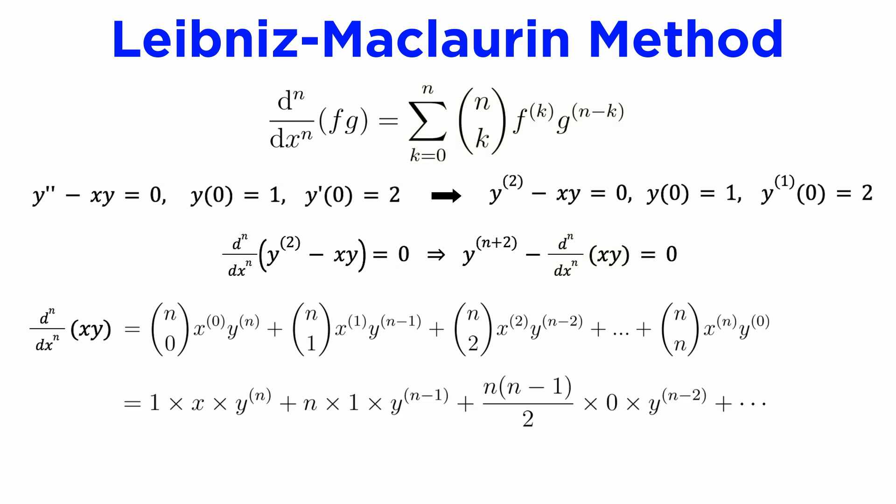If we expand out all n terms of this summation, we observe that the zeroth derivative of x is x, the first derivative of x is one, and the second derivative of x is zero, with all higher derivative terms also being zero, so only the first two terms remain. We get the nth derivative of xy as x times y differentiated n times plus n times y differentiated n minus one times.